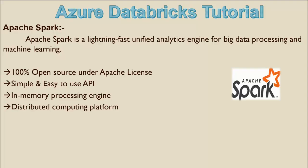Next is the distributed computing platform. Distributed means if we get any request for accessing data or any task, it will distribute that task into different smaller tasks. For example, if we request 100,000 rows based on a certain date period, it will distribute the work across different nodes, and the cluster manages all of these. Your request will be split into small tasks, data will be fetched in parallel, and results returned quickly.